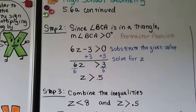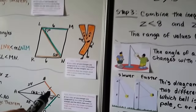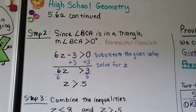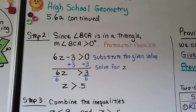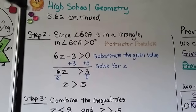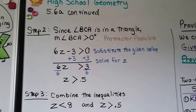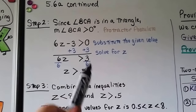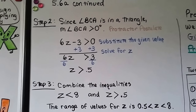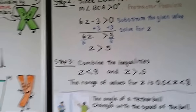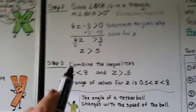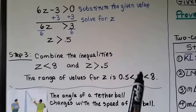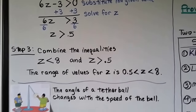Step 2: since angle BCA is in a triangle, it must be greater than zero by the Protractor Postulate. So 6Z minus 3 is greater than 0. Adding 3 to each side gives 6Z greater than 3, and dividing by 6 gives Z greater than 0.5. Step 3: combining the inequalities — Z is less than 8 and Z is greater than 0.5 — so the range of values for Z is 0.5 < Z < 8.